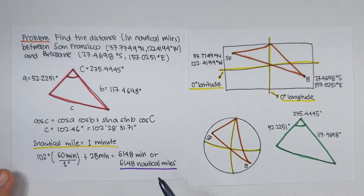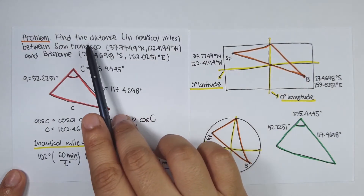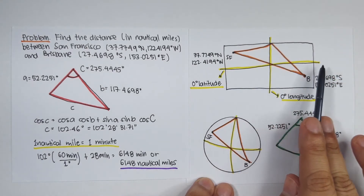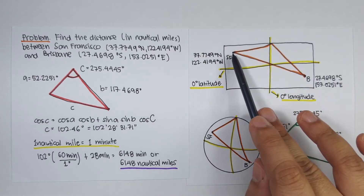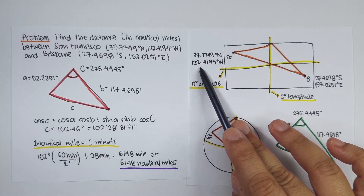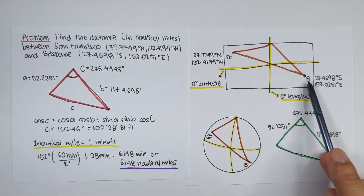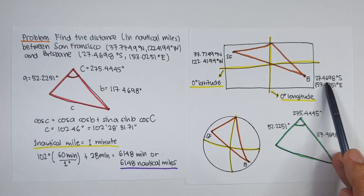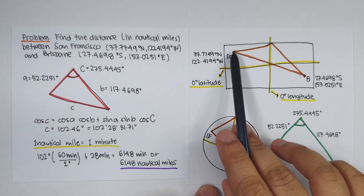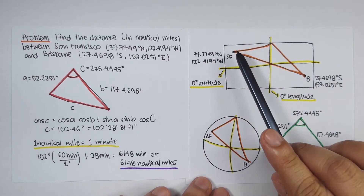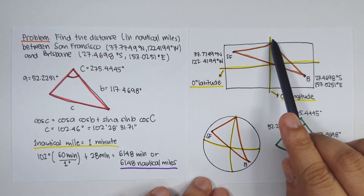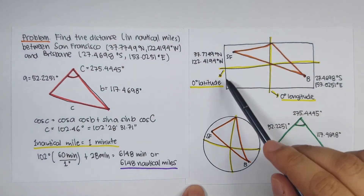Last problem: find the distance in nautical miles between San Francisco at 37.7749 degrees north and 122.4194 degrees west, and Brisbane at 27.4698 degrees south and 153.0251 degrees east. Draw segments from both cities to the north pole to form a spherical triangle.